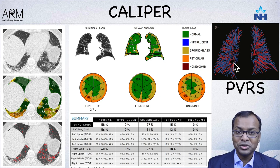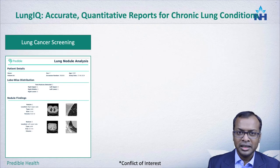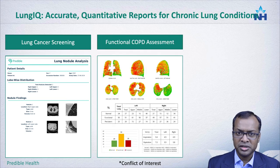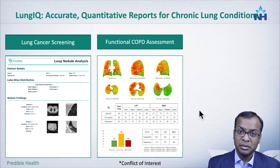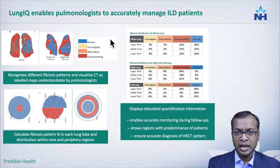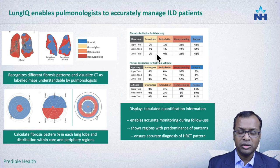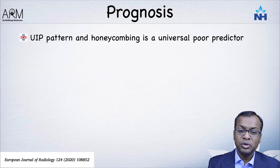PVRS is a very useful value for prognosis. In India, an alternative to CALIPER is Predible Health — I should declare a conflict of interest as I am one of their advisors. This is an AI-based software able to detect lung cancer nodules, quantify emphysema, quantify COVID involvement, and now quantify the degree and pattern of fibrosis for prognostication of patients with fibrosing interstitial lung disease.